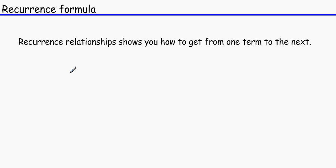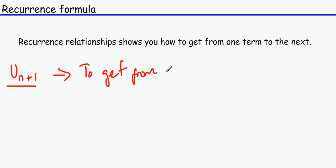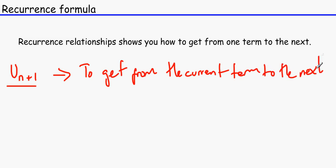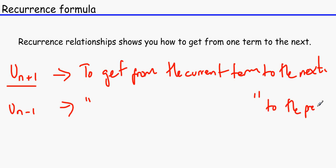We represent that by writing UN plus one, and this tells us how to get from the current term to the next. If we wanted to find the previous term, we write UN minus one — that is to get from the current term to the previous term. And if we wanted to get to the second-next term, we would write UN plus two, and so on and so forth.